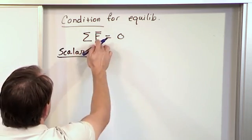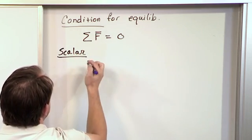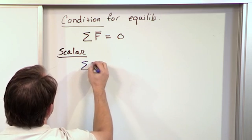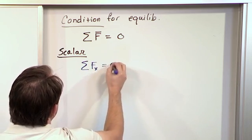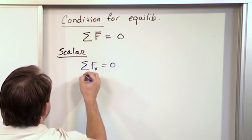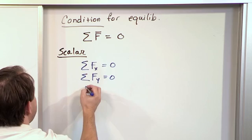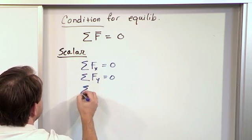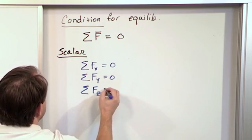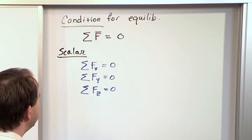The scalar form of this vector equation in two dimensions boils down to summing the forces in the x direction equal to zero, and summing the forces in the y direction equal to zero. Now that there's a third dimension, we're going to sum the forces in the z direction, and they have to also be zero.